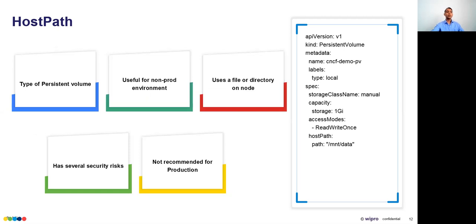Host path is a way to utilize storage that is locally present on a server node. In this YAML example, a persistent volume is created with host path pointing to '/mnt/data'. The storage comes from the local worker node. The major limitation is that storage is local — it is not replicated from one worker node to another. So if that worker node goes down, even though you are using a persistent volume, your data will be gone because the underlying storage itself is unavailable.